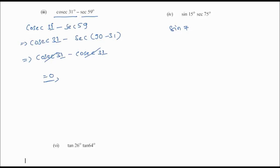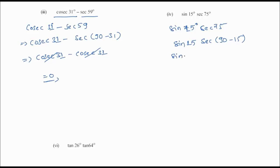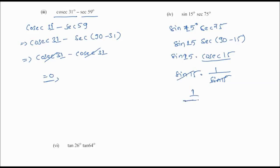Fourth question: sin 15° × sec 75°. We write sec 75° as sec(90° - 15°), which equals cosec 15°. So sin 15° × cosec 15° = sin 15° × (1/sin 15°). These cancel, giving 1 as the answer.